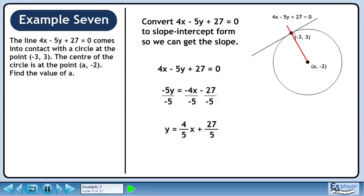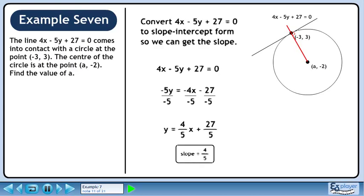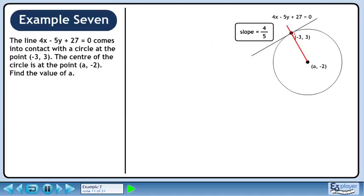The slope-intercept equation is y = 4/5x + 27/5. The slope is 4/5. Let's store the slope beside the original line so we can reference it later.